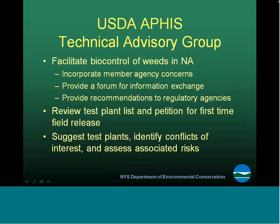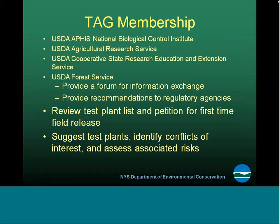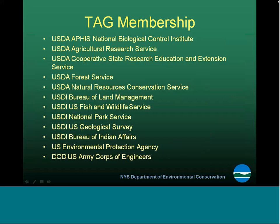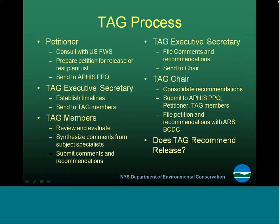Within USDA APHIS, there's a TAG group — a Technical Advisory Group — to facilitate biological control of weeds in North America. They review test plant lists and petitions for first-time field release of biological control agents, suggest test plants, identify conflicts of interest, and assess risk prior to any permits being issued by USDA. Membership includes NRCS, ARS, Forest Service, Natural Resource Conservation Service, Bureau of Land Management, and other federal agencies, with the ability to bring on three to four additional expertise members per project.